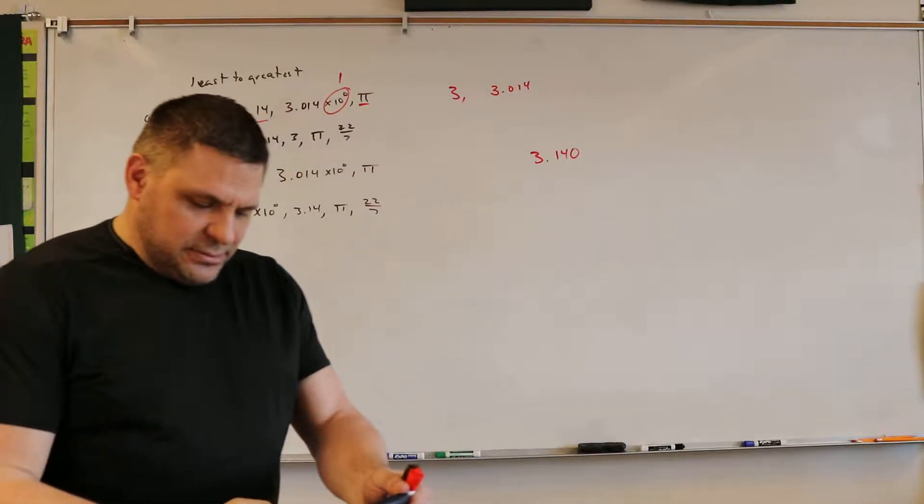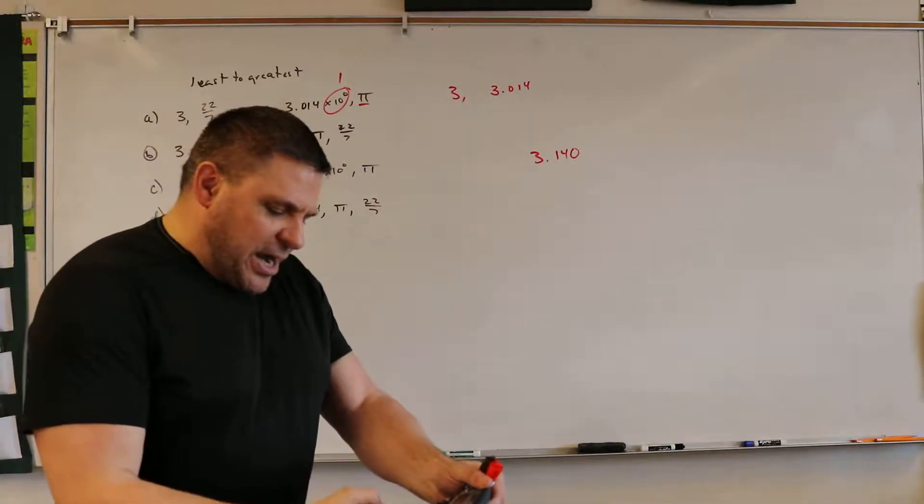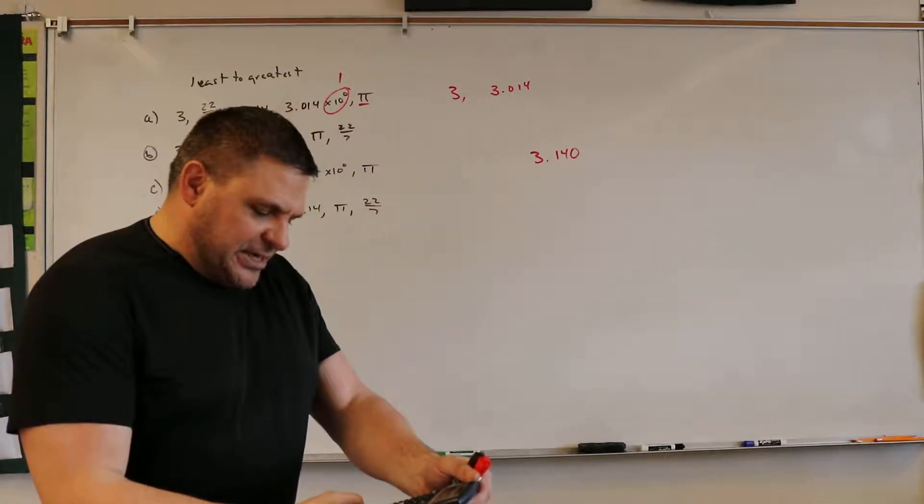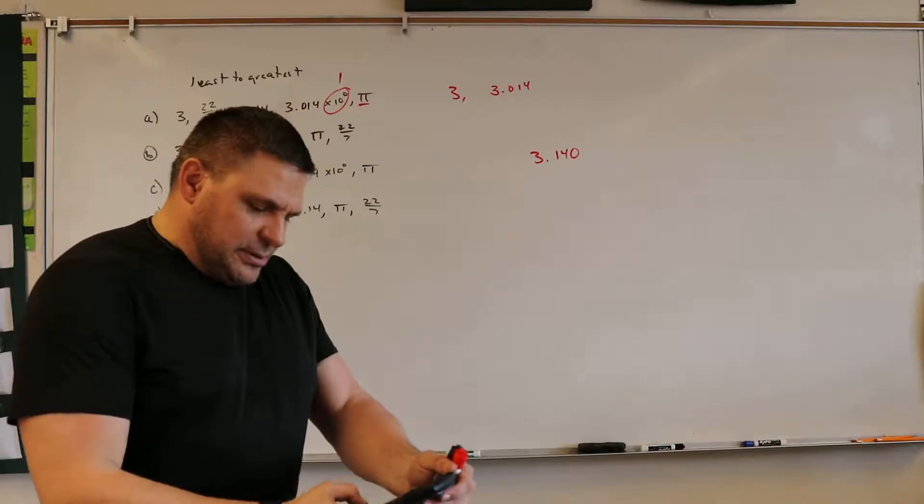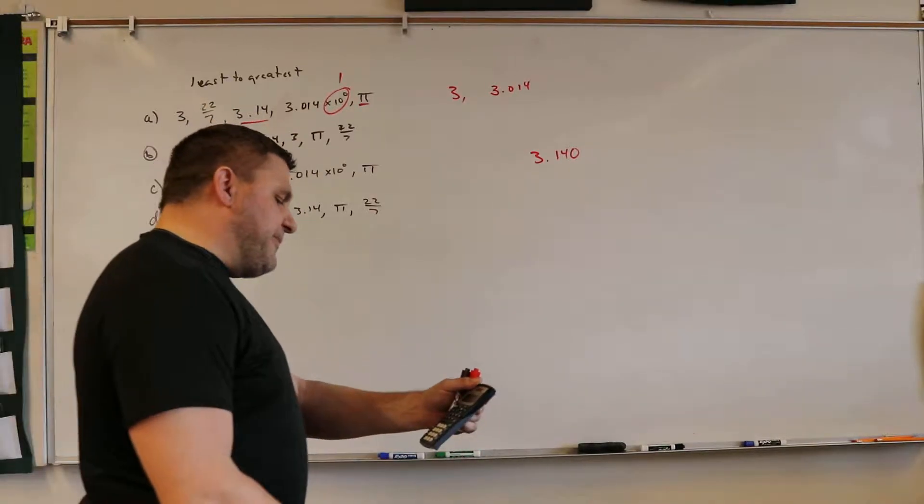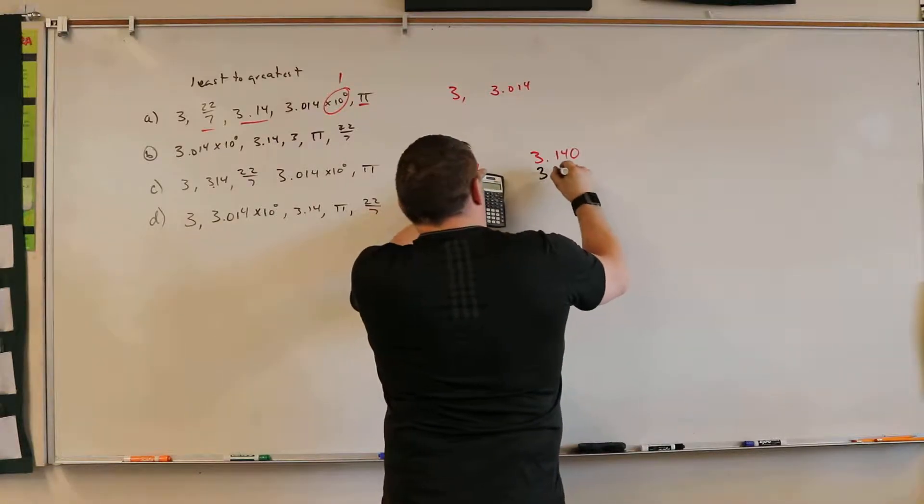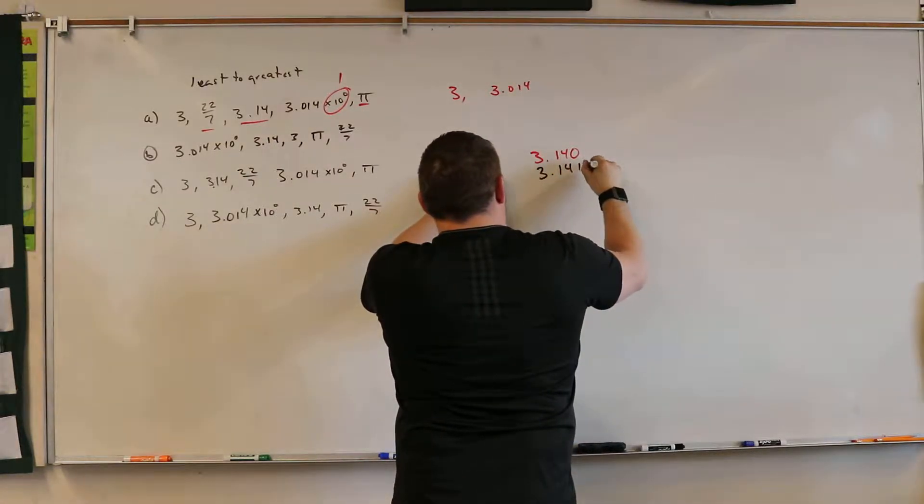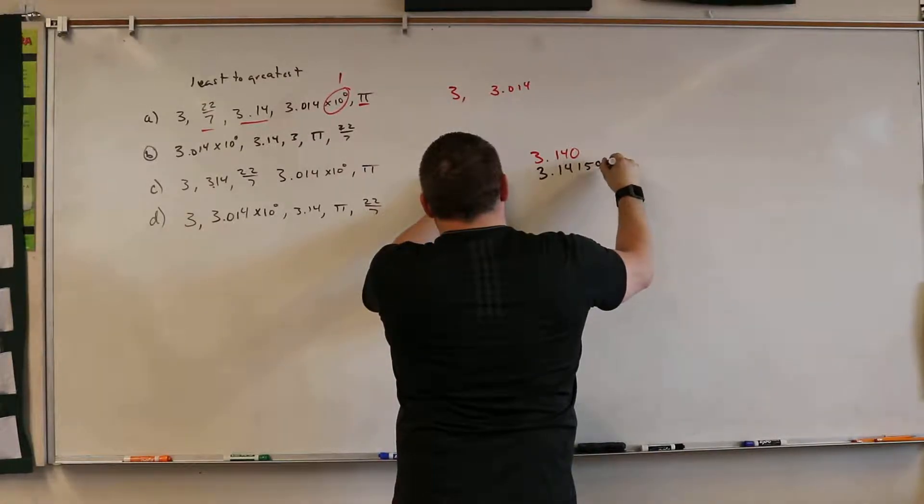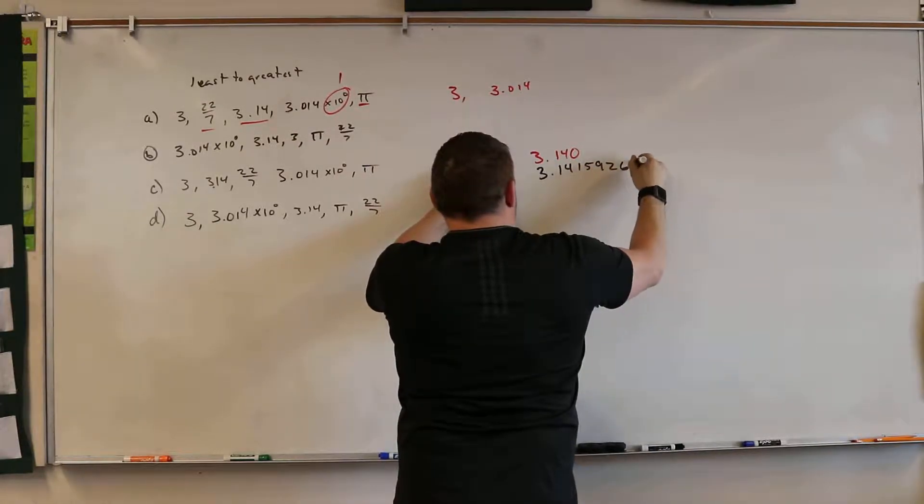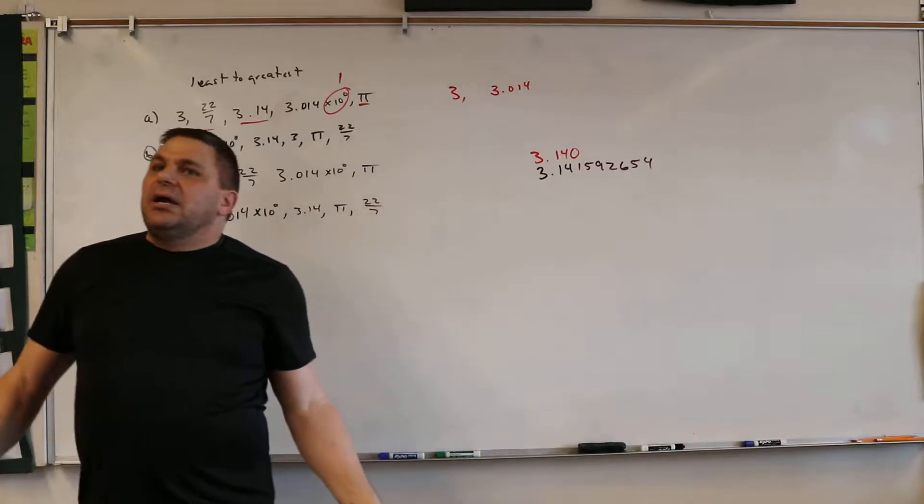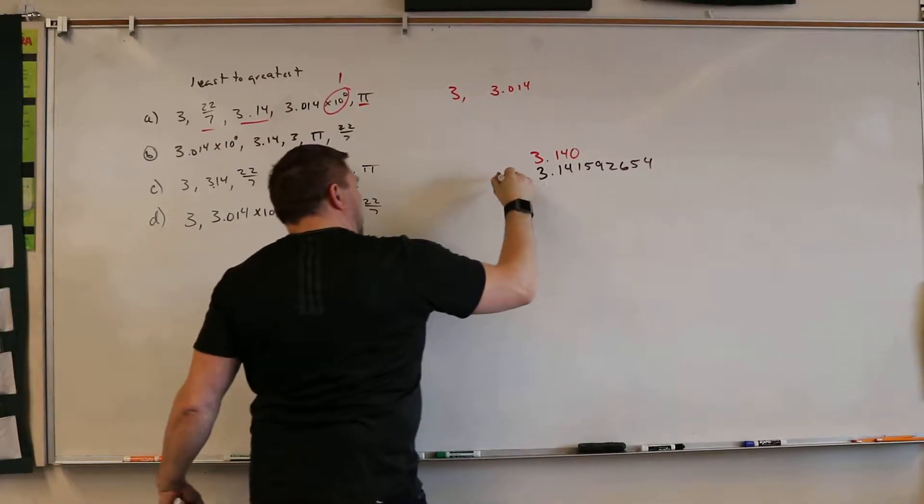Okay? So when we bring up pi on the good old-fashioned calculator and we hit equals, we get 3.141592. Whew! That's a big one. 3.141592654. Okay? That's pi on the calculator.